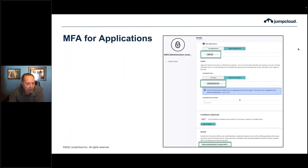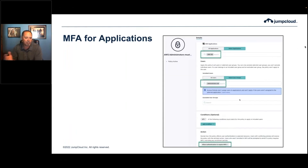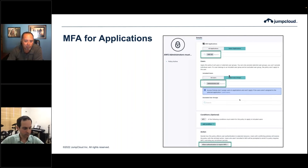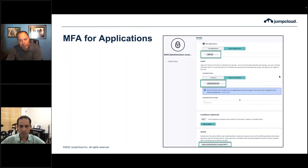Now for applications — Eric mentioned Office 365. In this case, I want to target MFA for access to AWS. JumpCloud makes it super easy: I can specify that exact application, choose all applications, or target a subset of multiple applications. In addition, we allow you to target all users or select specific user groups. In this case, we've specified the administrators user group.